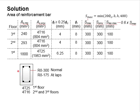Therefore, in conclusion, for the size of 300 × 400 column, 4T25 is provided at the first floor and 4T16 is provided for the second and third floor. As for the link, R8-300 is provided in the column. However, for the lapping regions and for the regions of h = 400 on top of the beam and below the beam, R8-175 is provided.